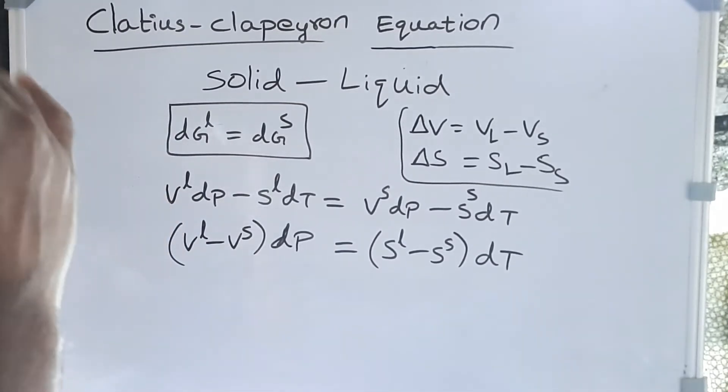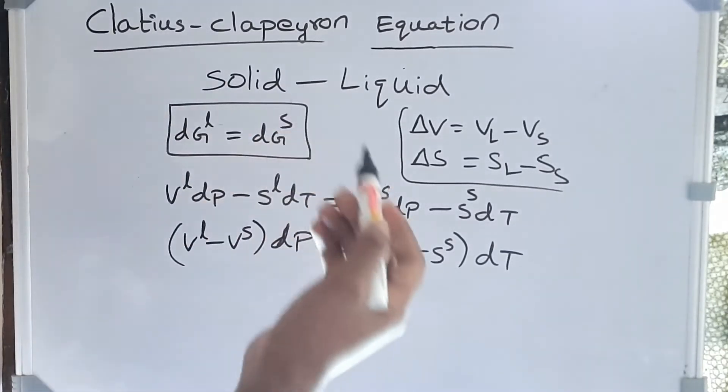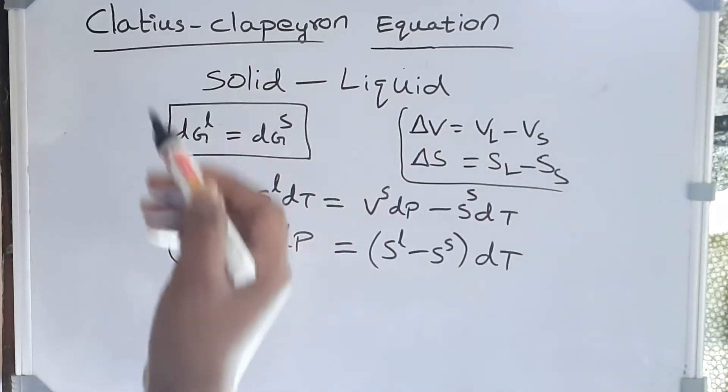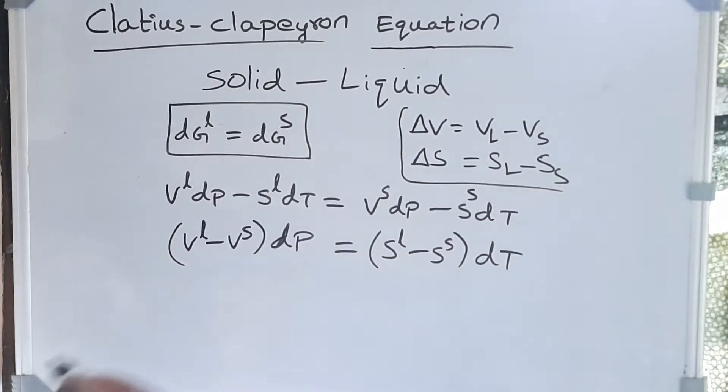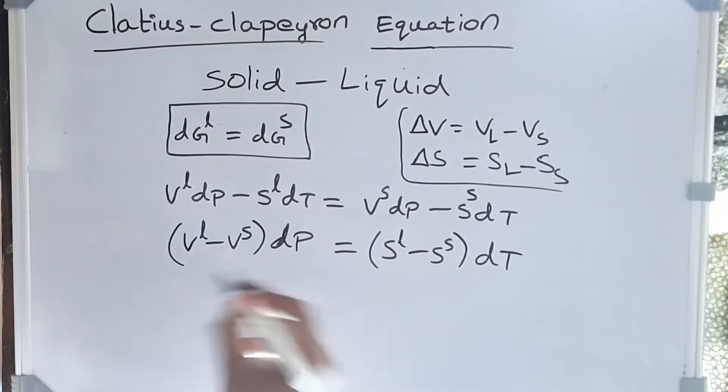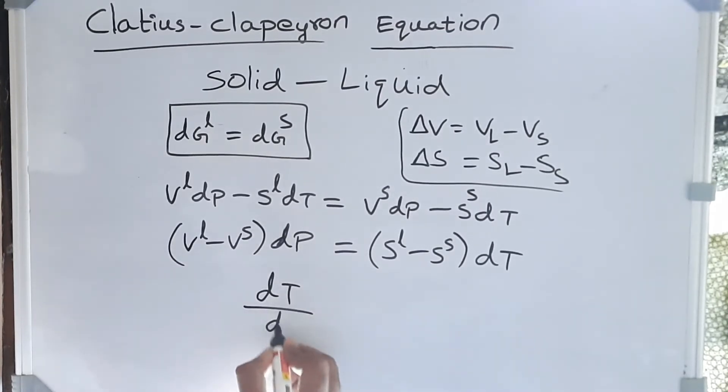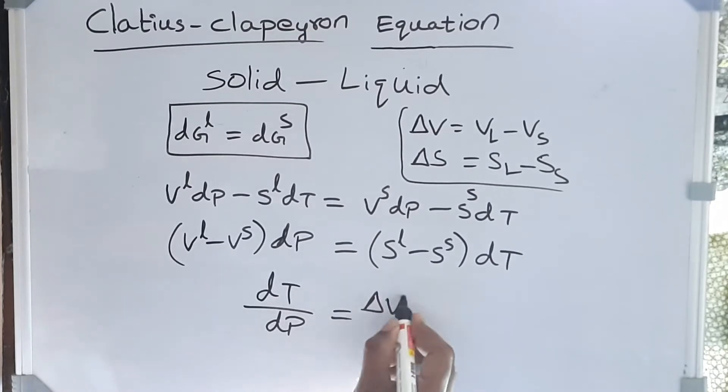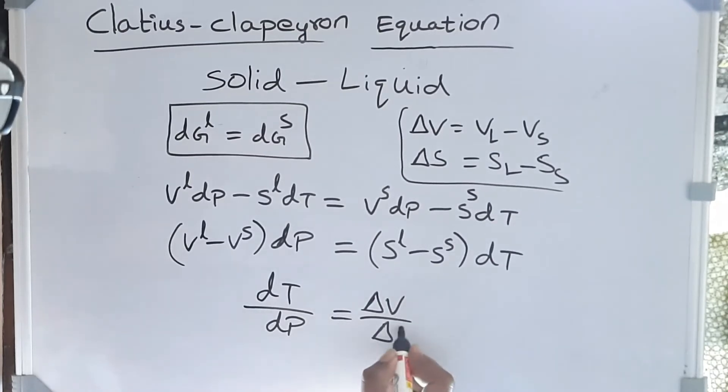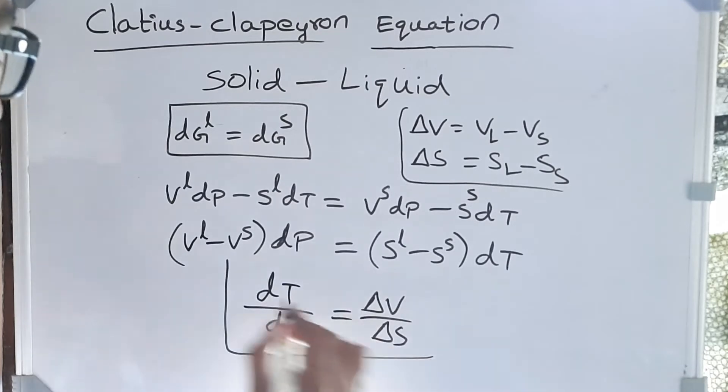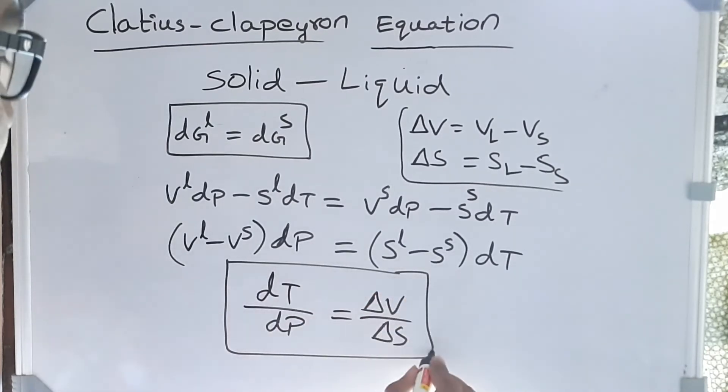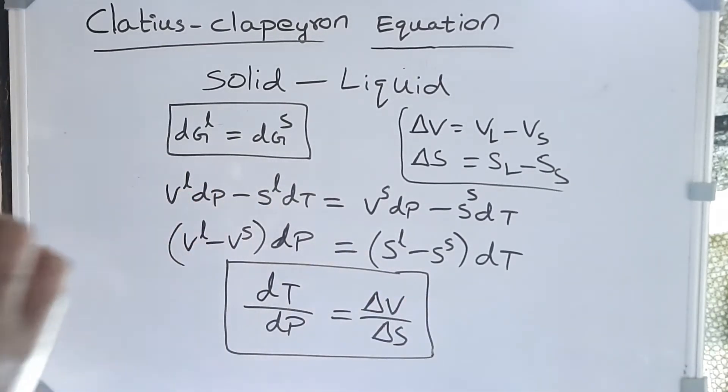Now when equating the free energies of solid and liquid we get this equation. And in thermodynamics we always consider product minus reactants. Here the transformation is solid to liquid, so ΔV = V_L - V_S and ΔS = S_L - S_S. By rearranging these things, we get dT/dP = ΔV/ΔS. Now this is our profound Clausius-Clapeyron equation.